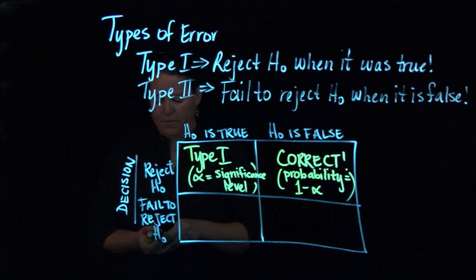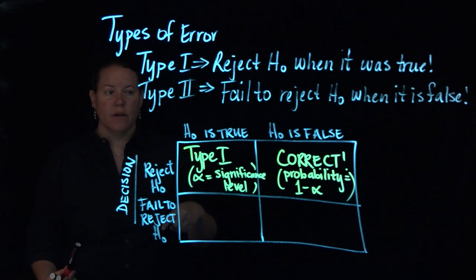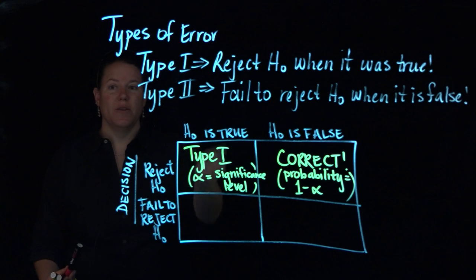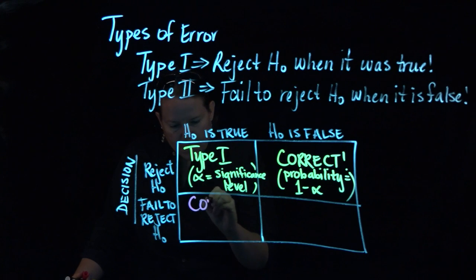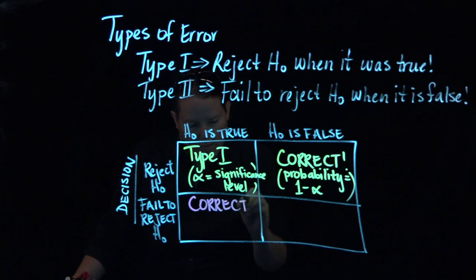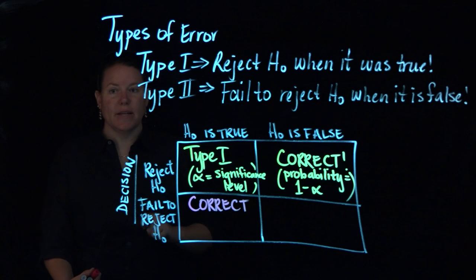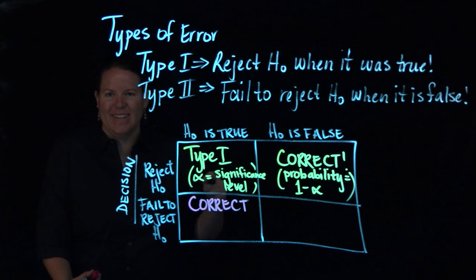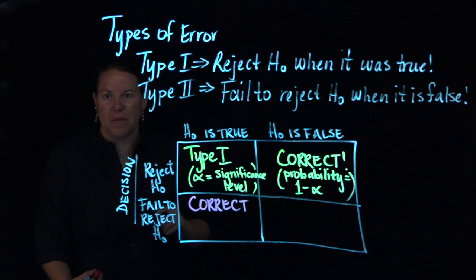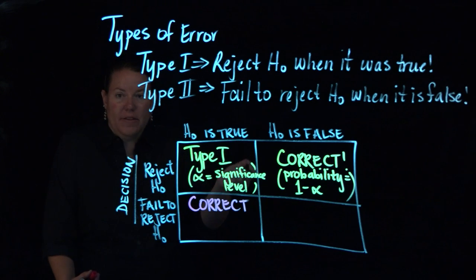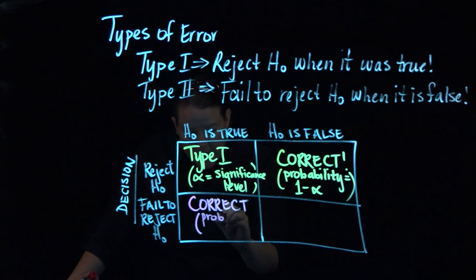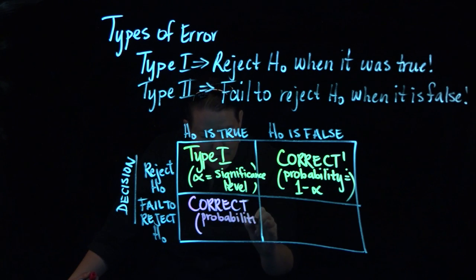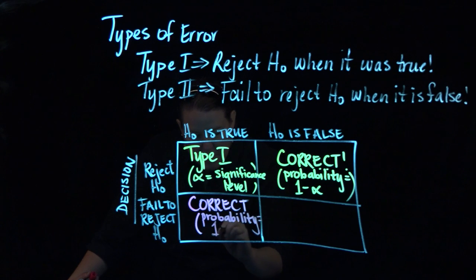Let's talk about the bottom part. If you fail to reject the null and the null was true, then you also did it correct. Right? Failing to reject the null is the same thing as saying you kept the null. So you either reject the null or you keep the null. That's what you're going to go with. And here, this is still correct, which is awesome. If that's correct, then the probability of getting this is 1 minus beta.